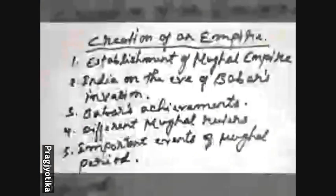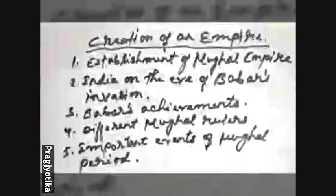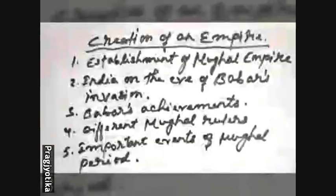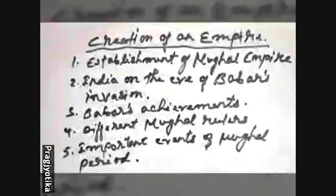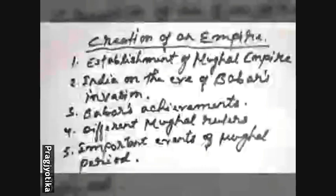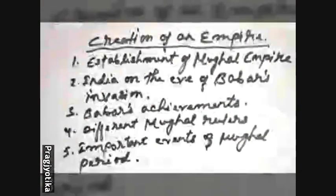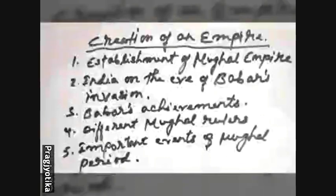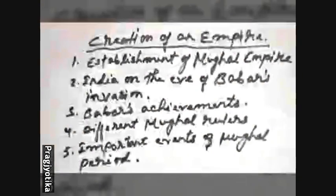We will learn about the establishment of the Mughal Empire. If you remember in the previous class, in the first term, we discussed about the Delhi Sultanate where different dynasties had ruled Delhi. The last ruler of the Delhi Sultanate was Ibrahim Lodi, and his defeat in the Battle of Panipat in the year 1526 ended the Afghan rule and established the Mughal rule in India.